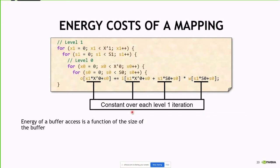The energy cost of a mapping is a function of the buffer size and the number of times you access each buffer. Remember the analogy of amplitude and period of waves — look at how fast each statement is changing. X1 is changing incredibly slowly, which means it's constant over each innermost iteration. What is changing are the offsets, and the S0 offset is changing faster than the X0 offset for this particular dataflow.